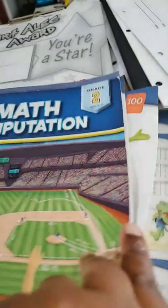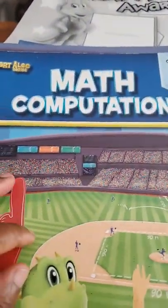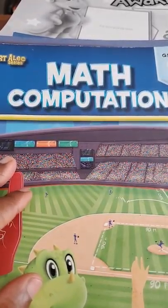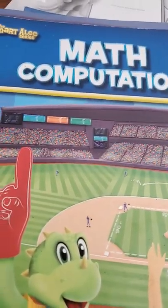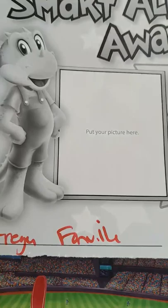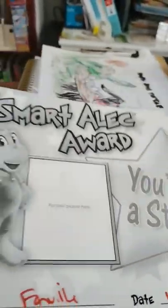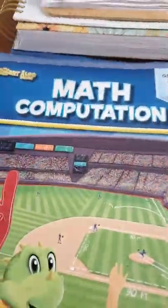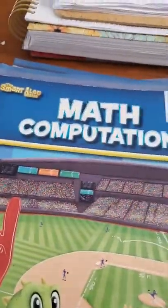So all in all I really did enjoy this Math Computation. We have I think one or two more in the Smart Alex series that we're gonna be doing. So we'll see how he does, but I like at the end it has a little certificate. So I just put his name and the date and he'll get to have it as a little certificate to show he's completed the work. But like I said, I got this one at Five and Below.